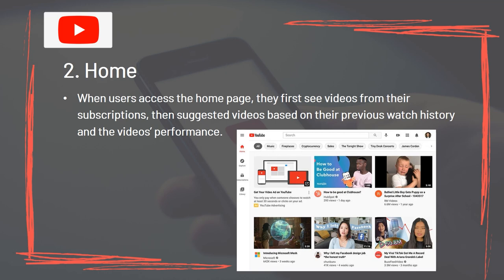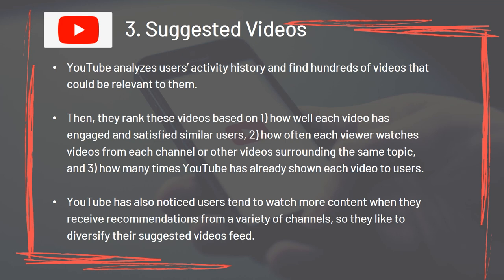For Home, when users access the home page, they first see videos from their subscriptions, then suggested videos based on their previous watch history and the video's performance. For Suggested Videos, YouTube analyzes users' activity history and finds hundreds of videos that could be relevant to them. They rank these videos based on: how well each video has engaged and satisfied similar users; how often each viewer watches videos from each channel or other videos surrounding the same topic; and how many times YouTube has already shown each video to users. YouTube also notices users tend to watch more content when they receive recommendations from a variety of channels, so they diversify their suggested video feeds.